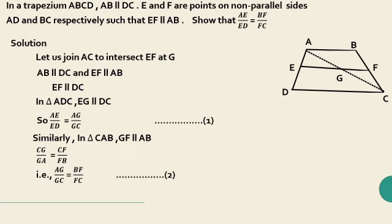From equations 1 and 2, look at these two equations: AE by ED is equal to AG by GC, and AG by GC is equal to BF by FC.